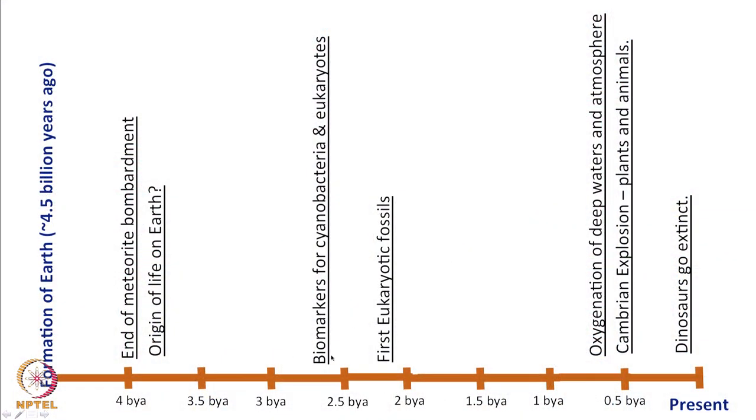Looking at the chart, the first evidence for this is about 2.7 billion years back, where we have some biomarkers for cyanobacteria and eukaryotes. The first real evidence for eukaryotic fossils comes from about 2.1 to 2.2 billion years back. For the next billion years or so, there was not much evolution in terms of complexity. What really dictated the next phase of evolution was oxygenation of the atmosphere and deep oceans. With the spread of cyanobacteria performing photosynthesis, oxygen was released in massive amounts — oxygen levels are speculated to have reached as high as 35 percent in the atmosphere.